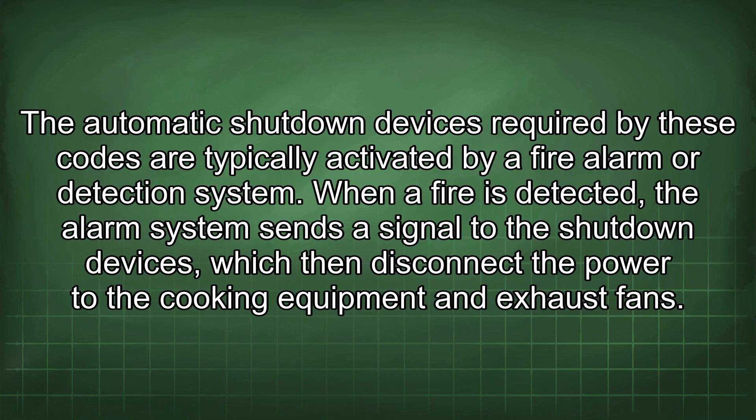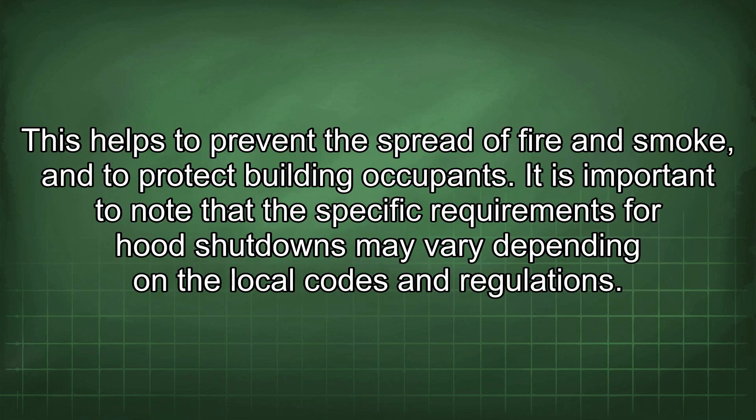When a fire is detected, the alarm system sends a signal to the shutdown devices, which then disconnect the power to the cooking equipment and exhaust fans. This helps to prevent the spread of fire and smoke and to protect building occupants.